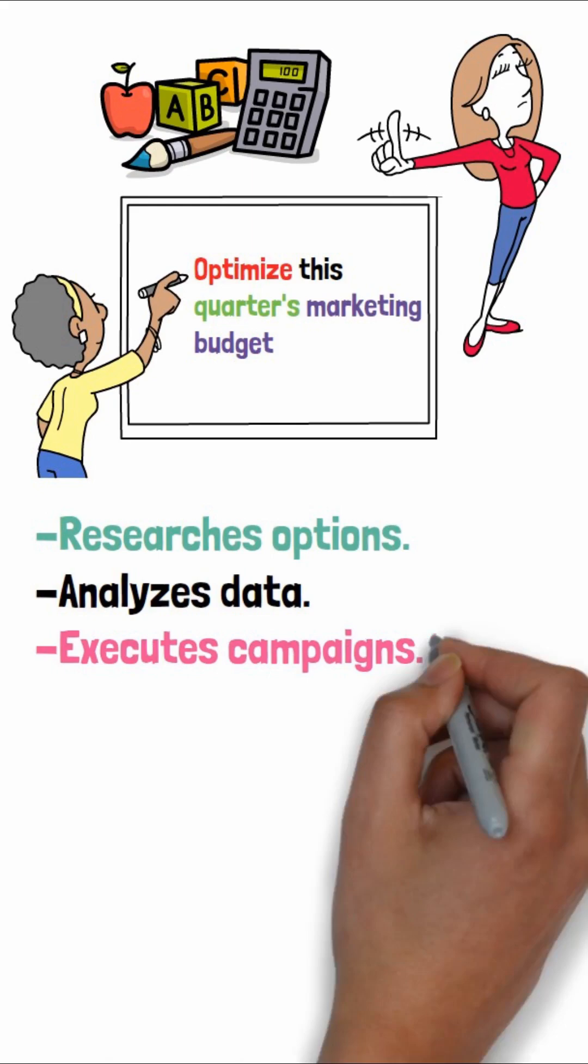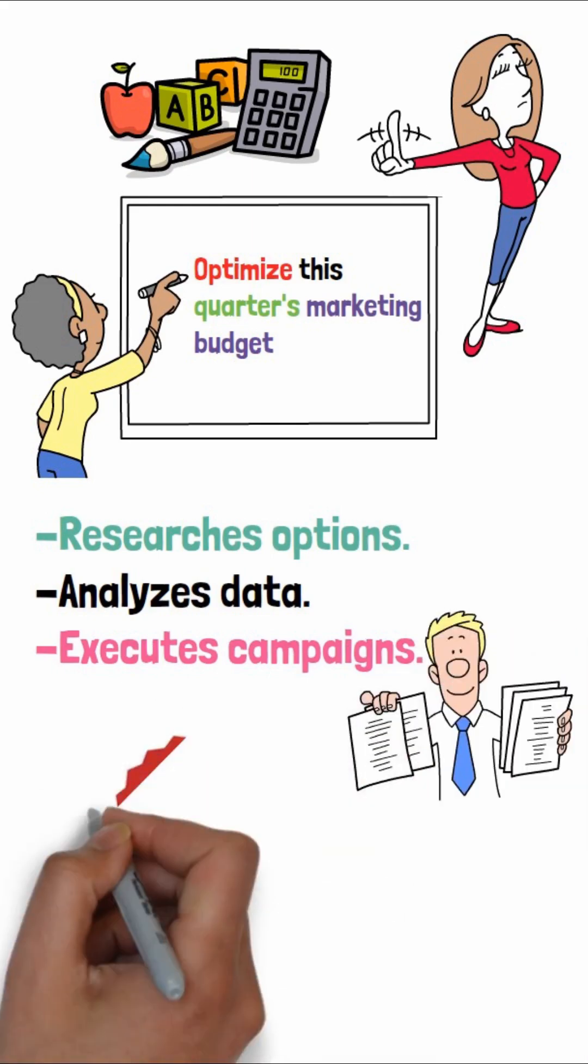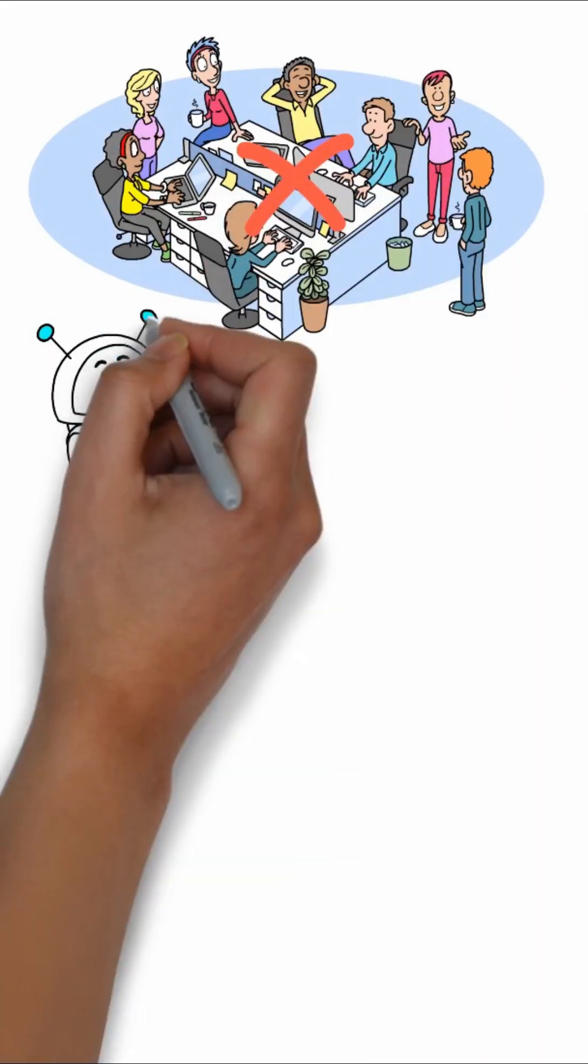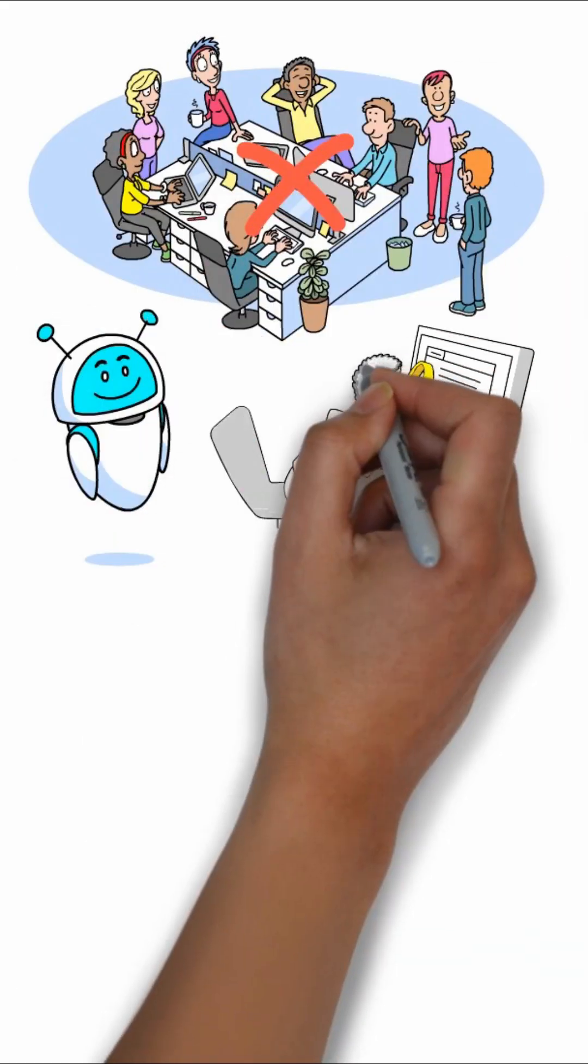executes campaigns, and reports results. Let's say you need to prepare for a product launch. Instead of you manually coordinating across teams, an Agentic AI system could analyze market trends,